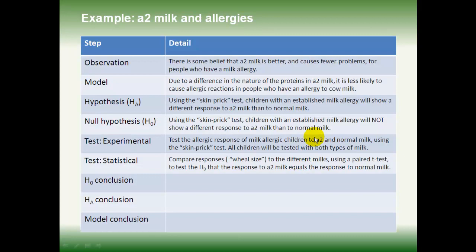So if we apply the statistical test to compare the response to the different milks, we will conclude that the response to A2 Milk is not different to the response to normal milk — it is not statistically significantly different. That's largely because of the considerable variability in responses. The test used here is a paired t-test, and we'll look in Topic 5 at what t-tests are and why we use a paired t-test in this case. The statistical test gives us no evidence to reject the null hypothesis, so we accept it: there's no difference in response to A2 Milk and to normal milk.